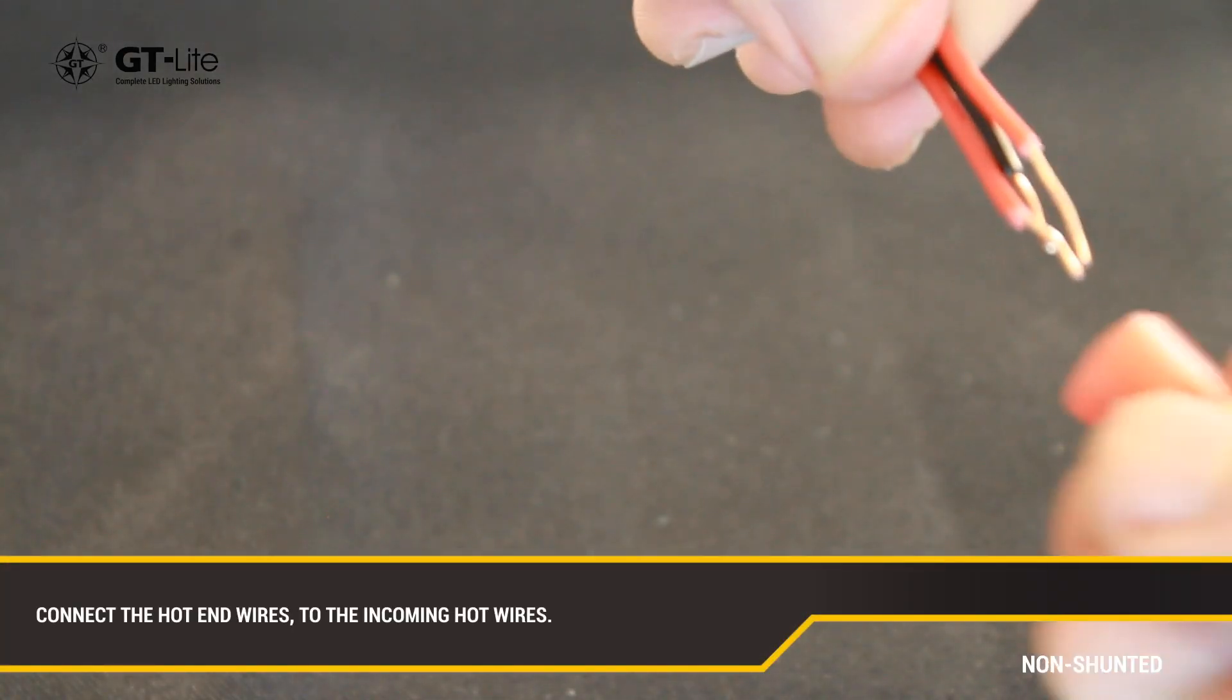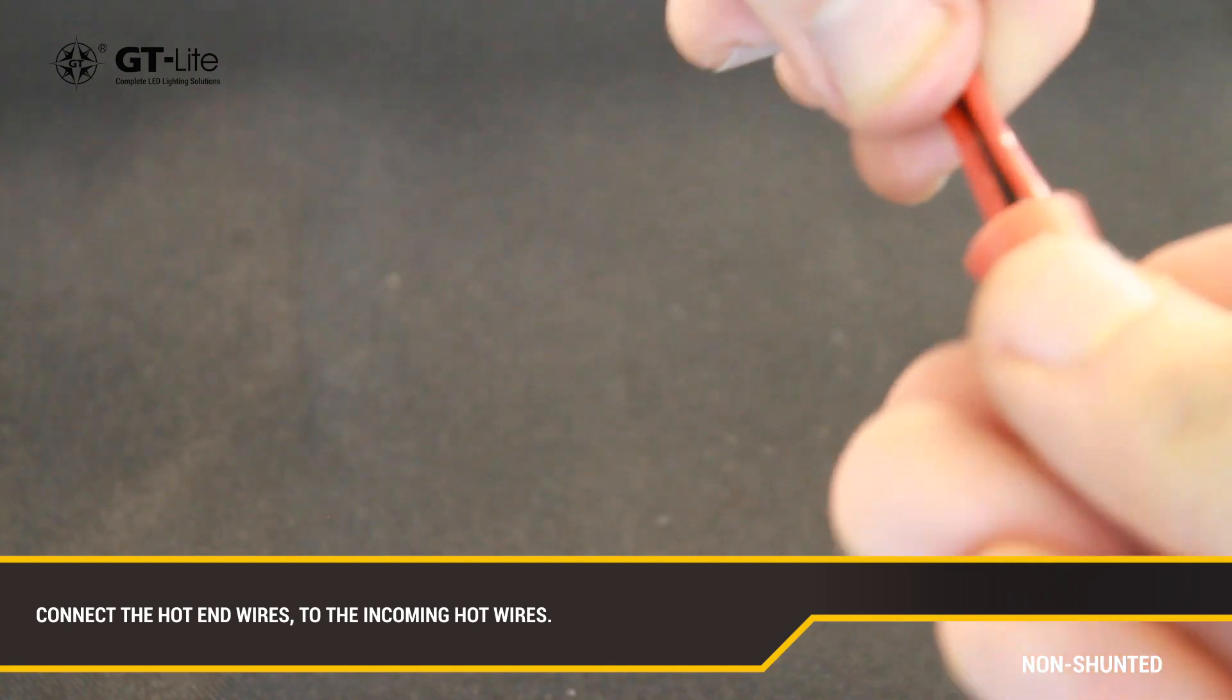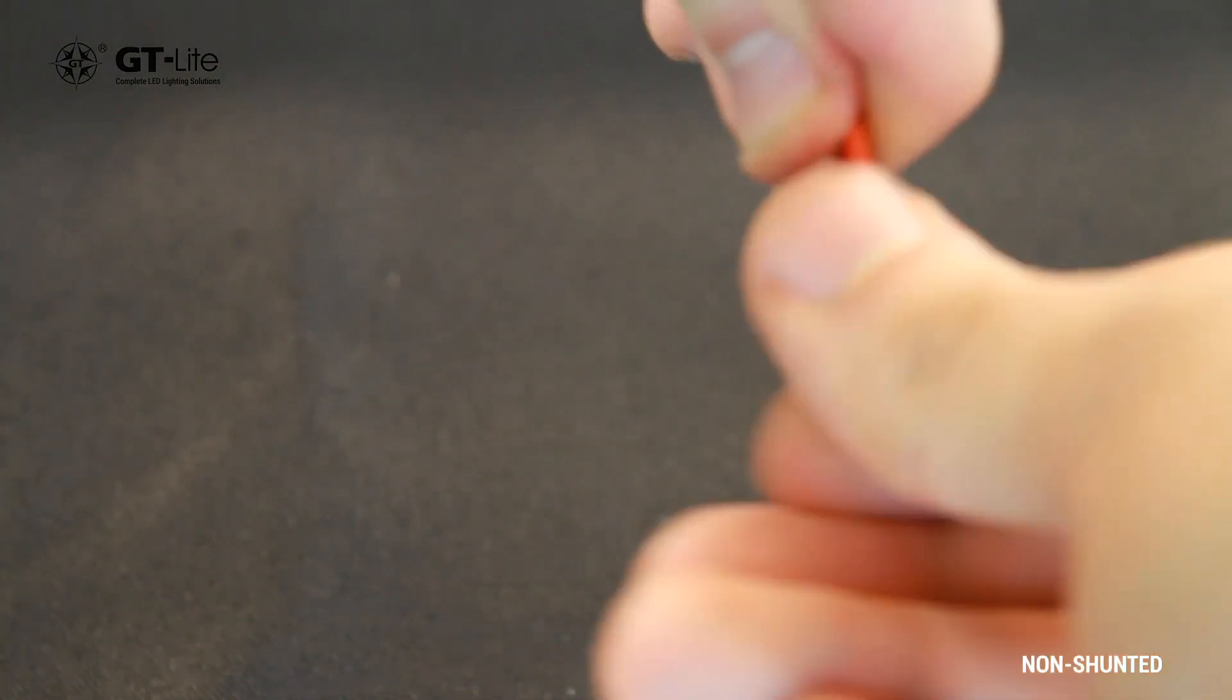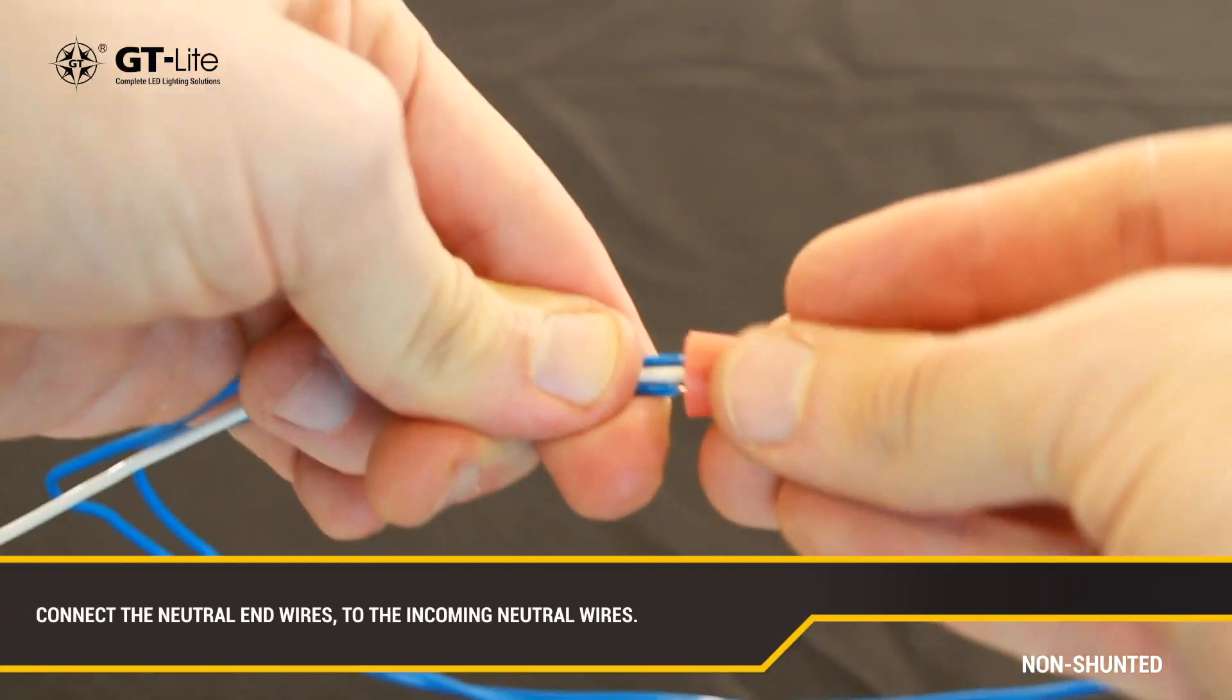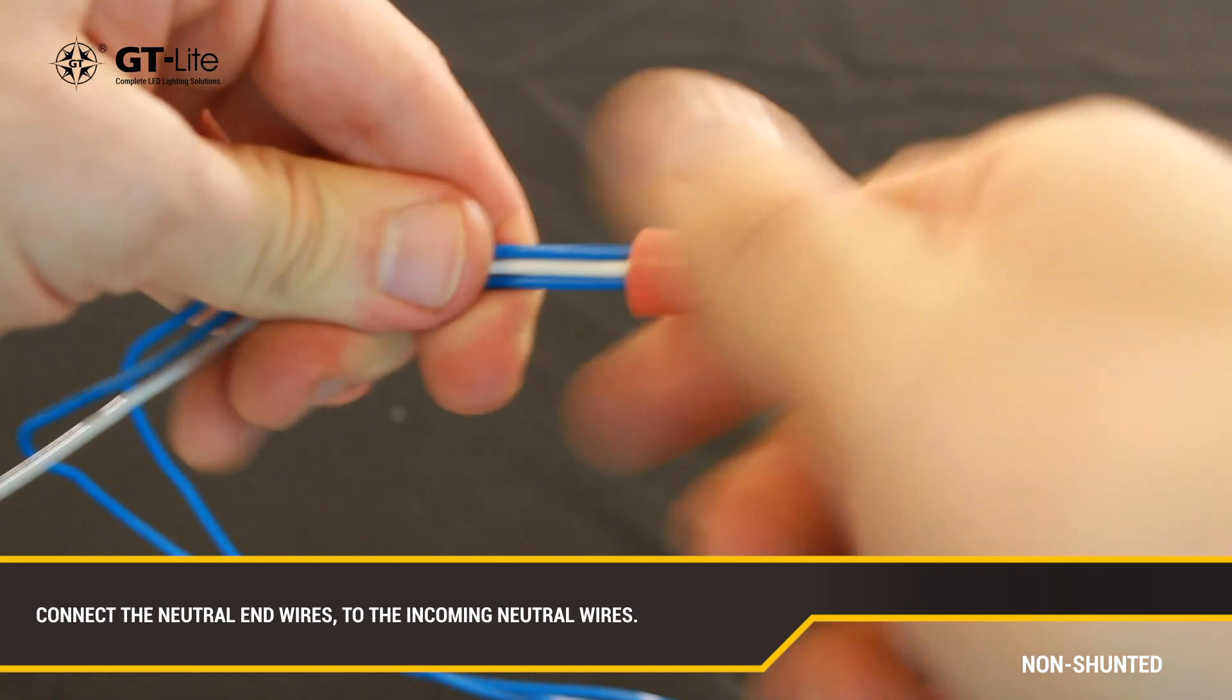Connect all wires designated as hot to the black wire coming into the fixture. And then connect all wires designated as neutral to the white wire coming into the fixture.